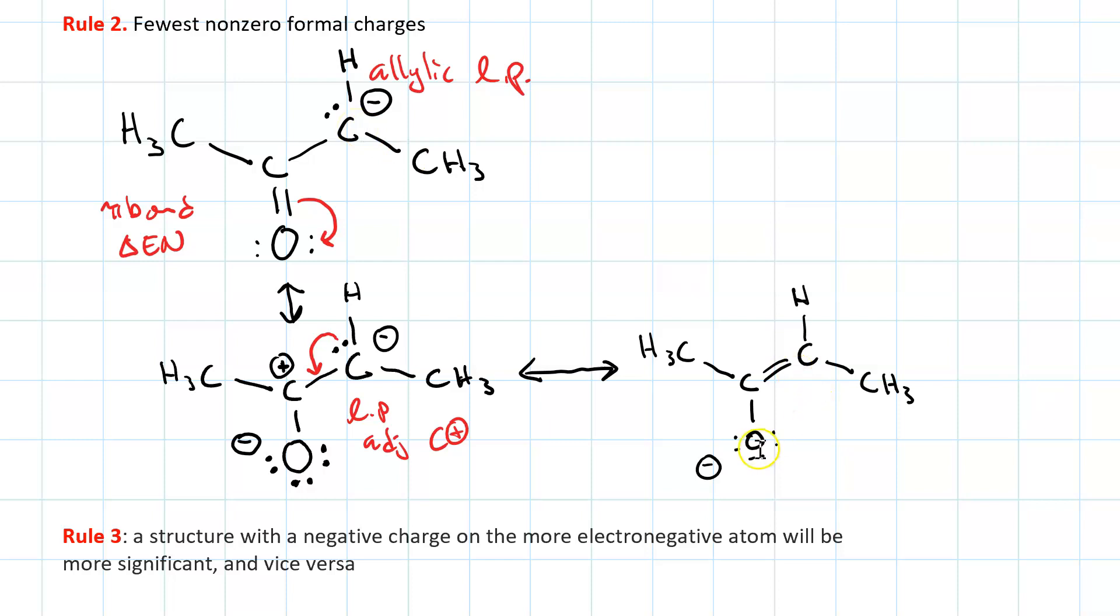So, a carbanion versus an oxyanion. Oxygen is more electronegative than carbon, and hence, the structure with the oxyanion is better than the structure with the carbanion.